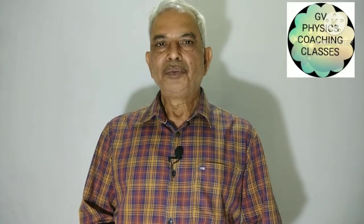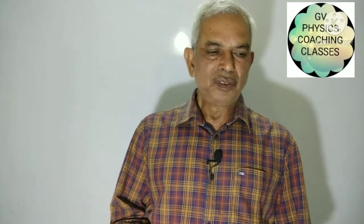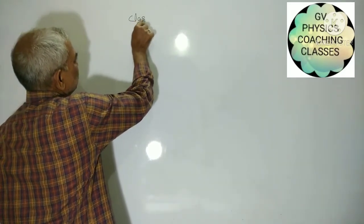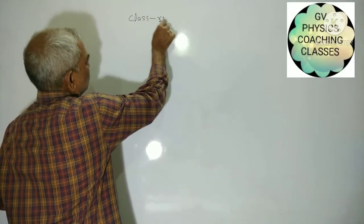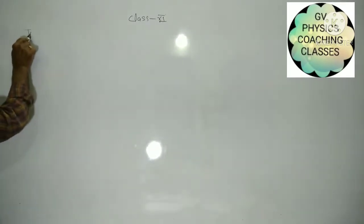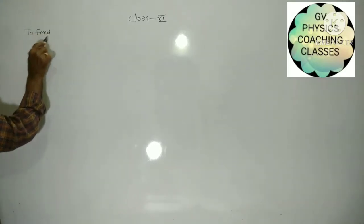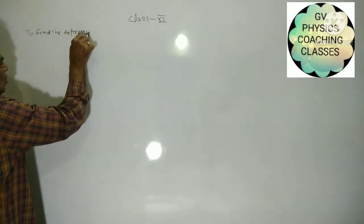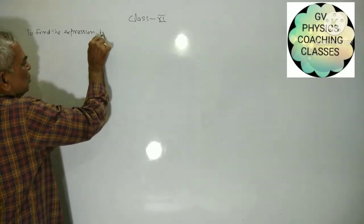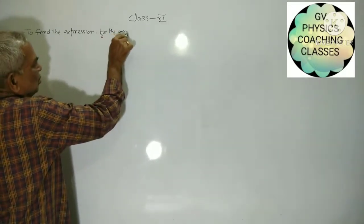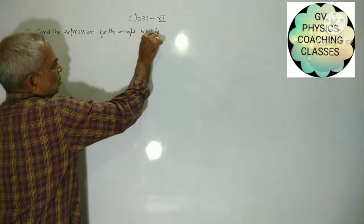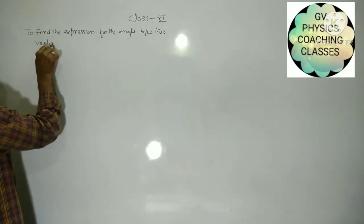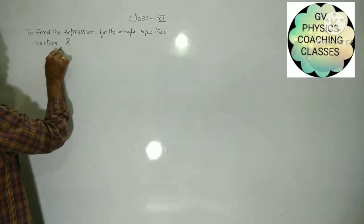Here we shall find an expression for the angle between 2 vectors, vector A and B.